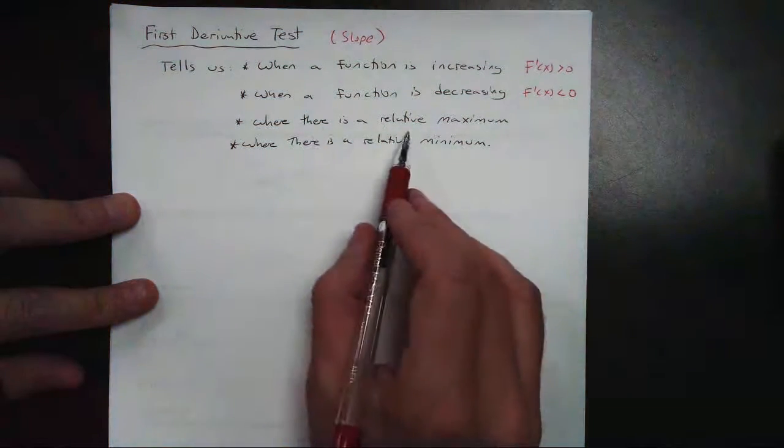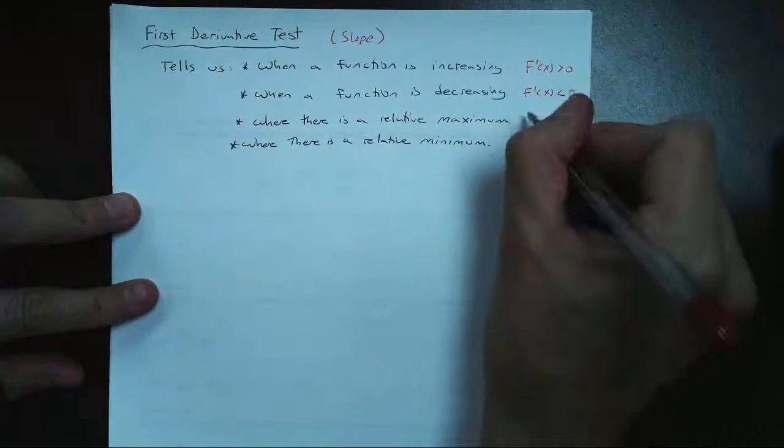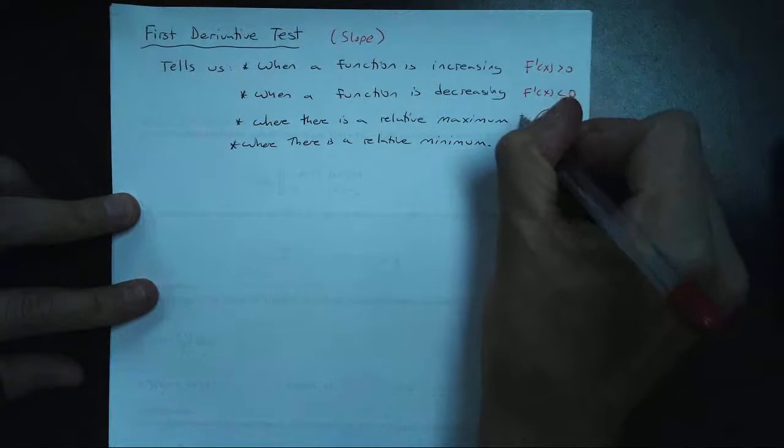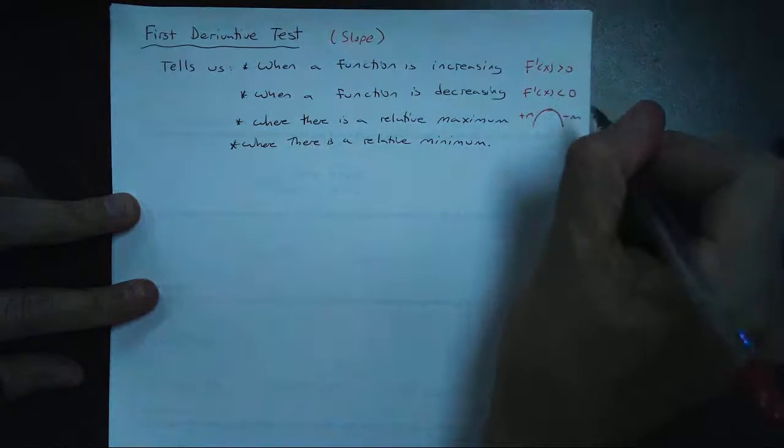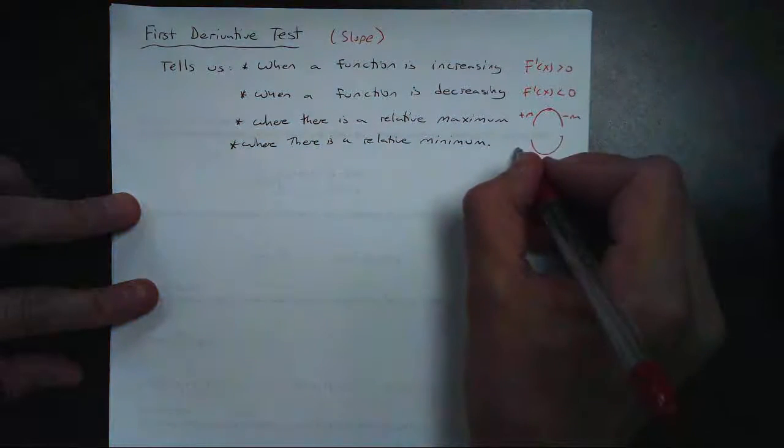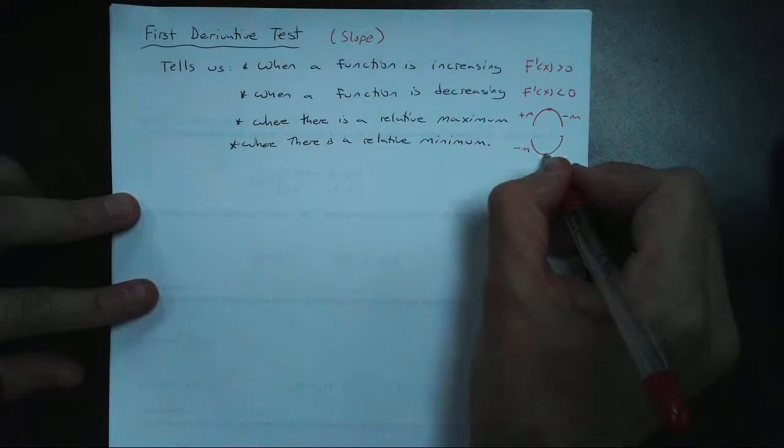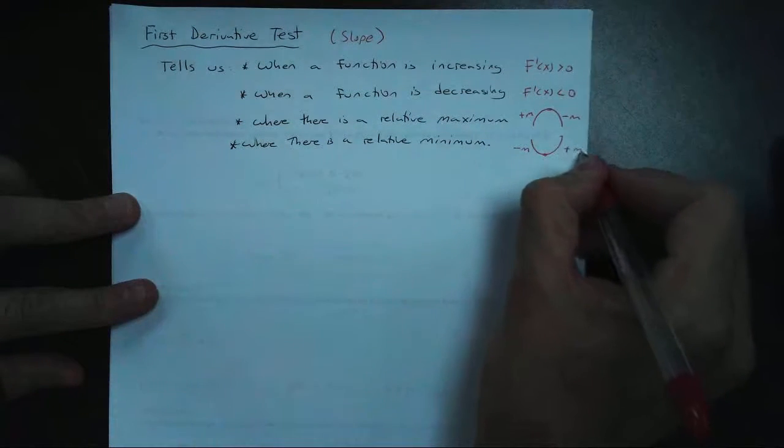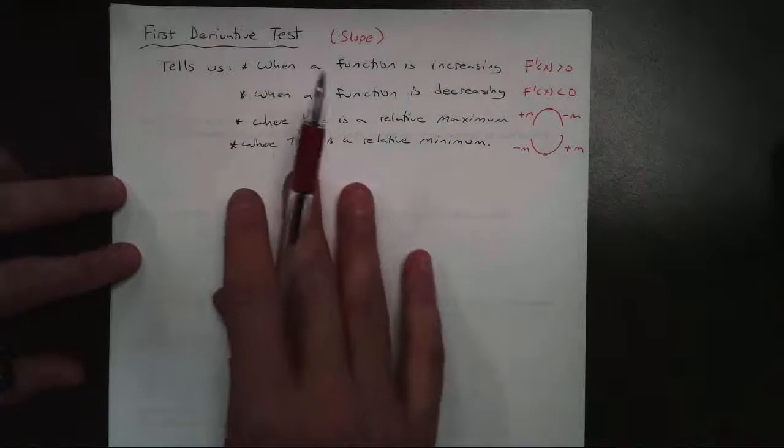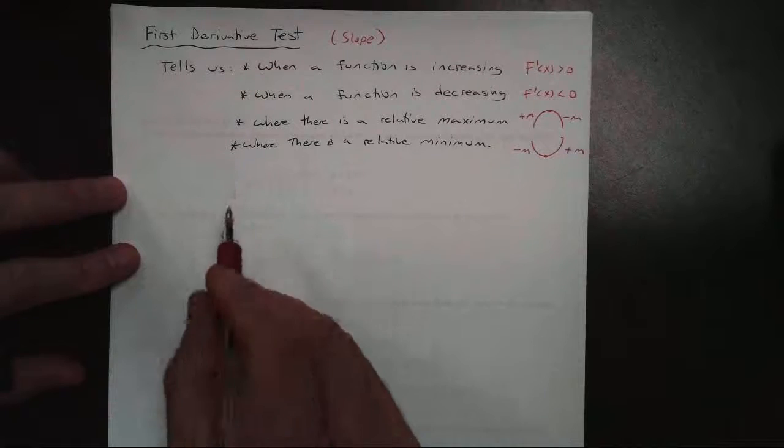When there's a relative maximum, the slope has to go from positive to negative. So if there's a maximum value, we know the slope has to go from a positive slope to a negative slope. And if there's a relative minimum, kind of the opposite. We go from a negative slope, here's my minimum, to a positive slope. And the first derivative test tells us all of this, and it's very easy to do.